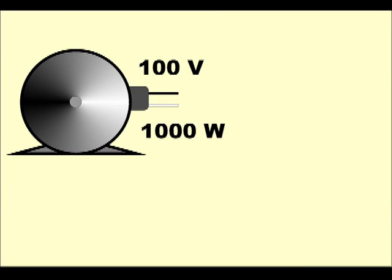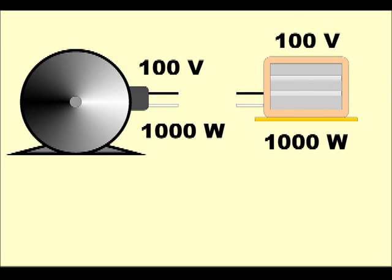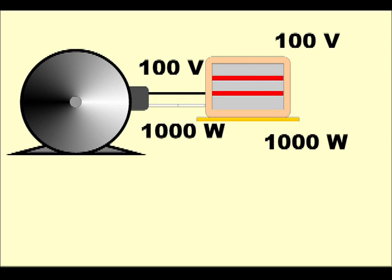Suppose we use a generator that delivers 100 volts and has the capacity to deliver 1000 watts of power. Now imagine that we buy an electric heater that consumes exactly 1000 watts when connected to 100 volts. If we connect the heater directly to the generator output, it will operate at full power. According to Ohm's law, a 1000-watt heater requiring 100 volts will draw a current of 10 amps and will have a resistance of 10 ohms.